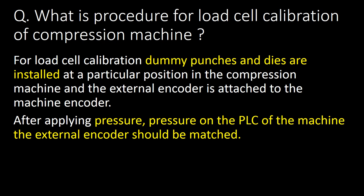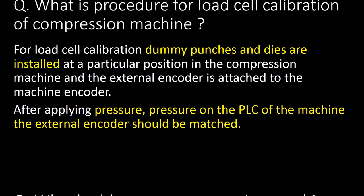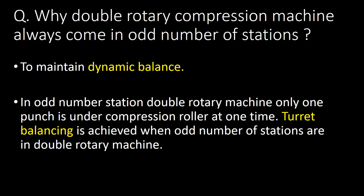What is the procedure for load cell calibration of a compression machine? For load cell calibration, dummy punches and dies are installed at a particular position in the compression machine and an external encoder is attached to the machine encoder. After applying pressure, the reading on the PLC of the machine and the external encoder should be matched.